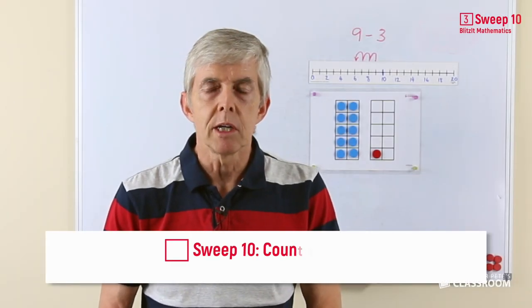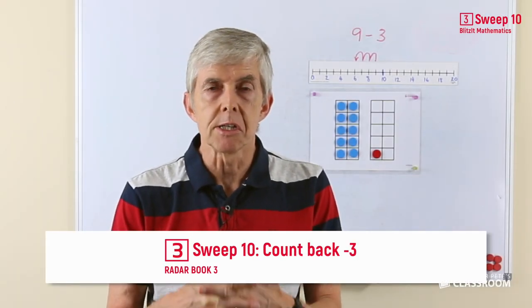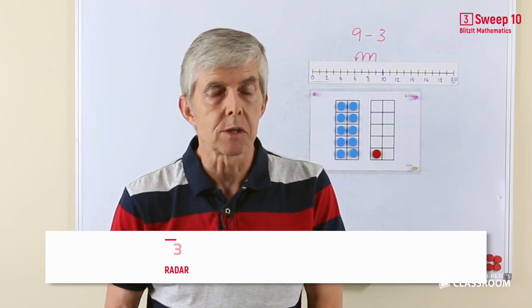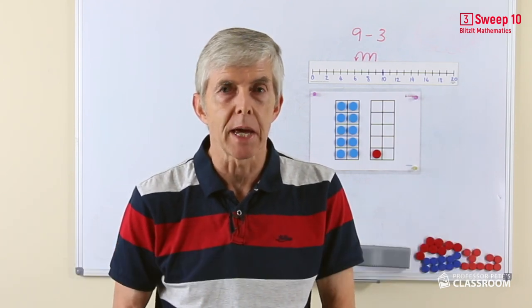In sweep number 10, as before, we are using a counting strategy. This is the limit of counting backwards for subtraction, and it's counting back by three.